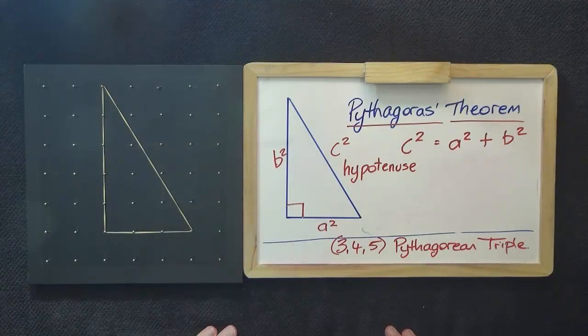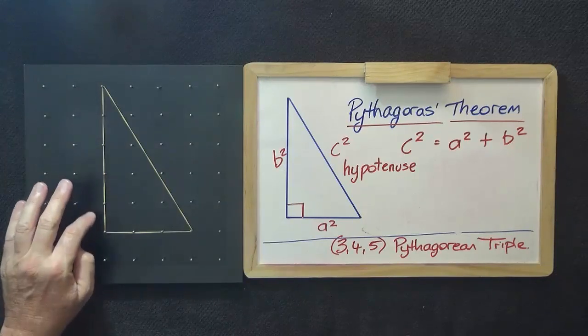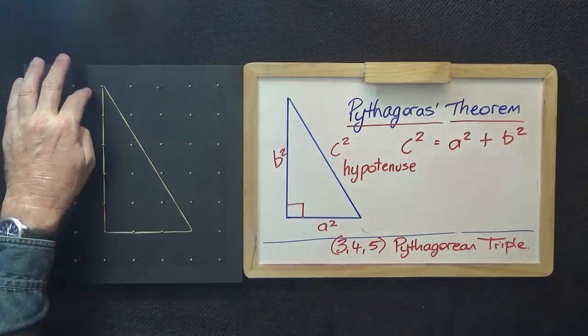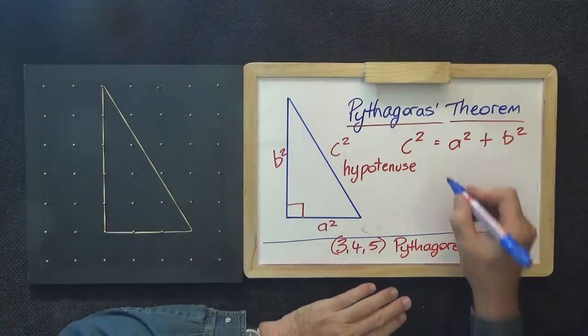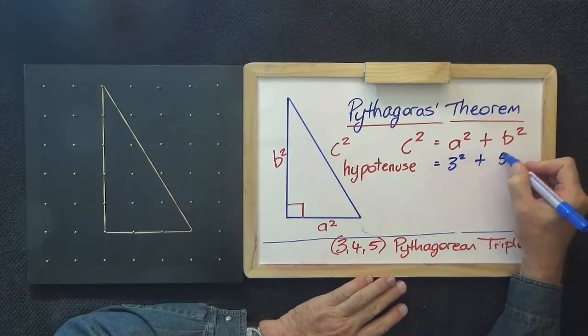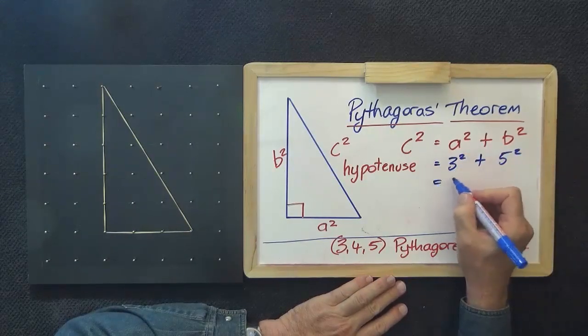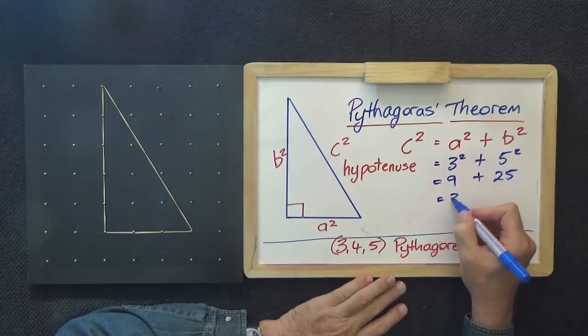For a second example, I have a triangle on the geoboard which is 1, 2, 3, 4, 5, a height of 5 and a base of 3. So that will equal 3 squared plus 5 squared equals 9 plus 25 equals 34.